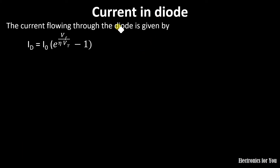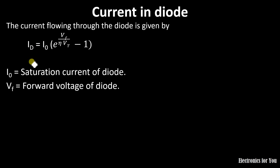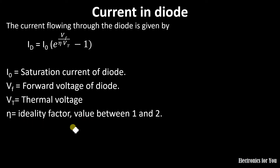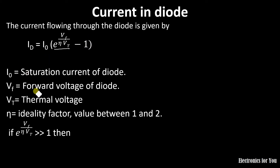The current flowing through the diode is given by: I_d = I_0 multiplied by e raised to the power V_f divided by (η·V_T) minus 1, where I_d is the diode current, I_0 is the saturation current, V_f is the forward voltage, V_T is the thermal voltage, and η is the ideality factor whose value lies between 1 and 2. Since e raised to (V_f / η·V_T) is much greater than 1, we can neglect the minus 1, giving approximately I_d ≈ I_0 · e^(V_f / η·V_T).